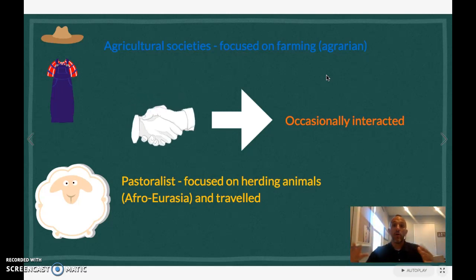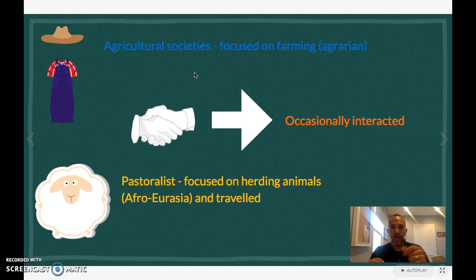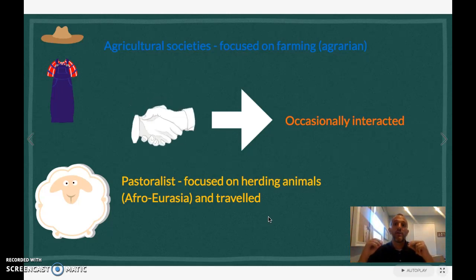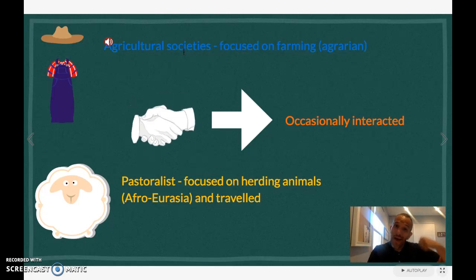These agricultural societies focused on farming — agrarian societies set up near water for drinking, bathing, and supporting crops. Different agricultural societies would occasionally interact, exchanging seeds and ideas. Not everyone switched to farming at once; it was a transition spanning thousands of years. Some groups remained nomadic, and others became pastoralists — herders who traveled with sheep or goats. Pastoralists were huge disseminators of information, traveling between agricultural societies and spreading ideas and knowledge from one community to another.